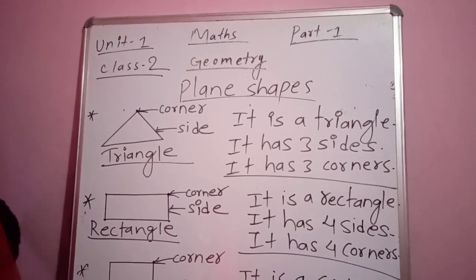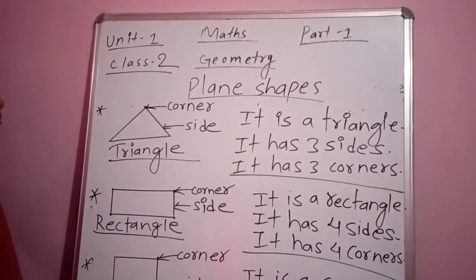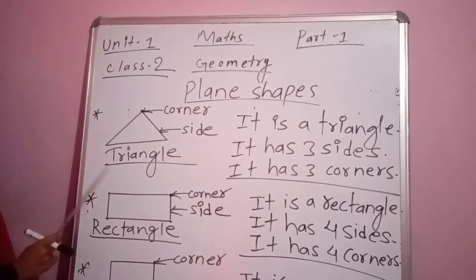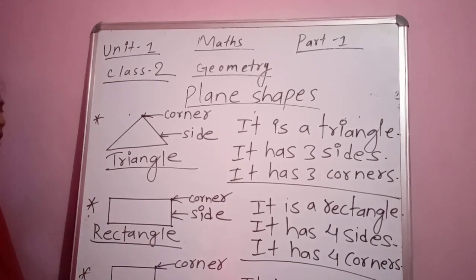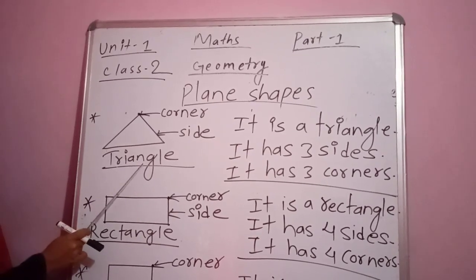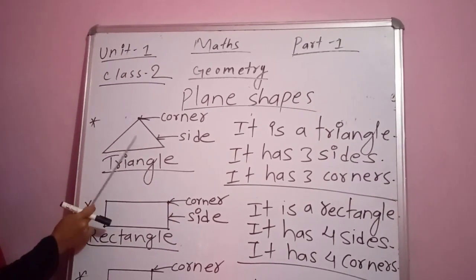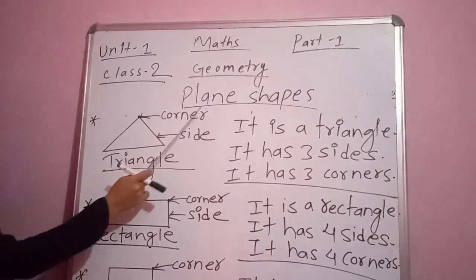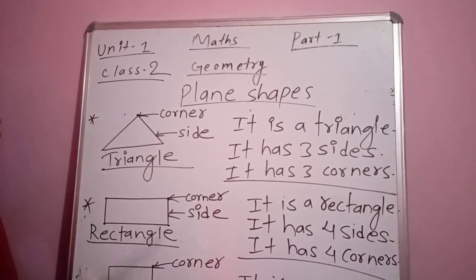Now I am going to teach you the third topic, which is plane shapes. There are different types of plane shapes. The first plane shape I am going to introduce to you all is a triangle — T-R-I-A-N-G-L-E. The name of the first plane shape is a triangle.